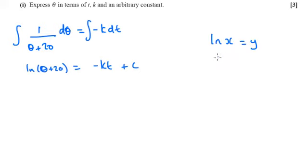If we know that log of x equals y, then the inverse of that is e, so that will equal e to the y. So this version over here is going to be that theta plus 20—that's like my x over here—is going to equal e to all of this.